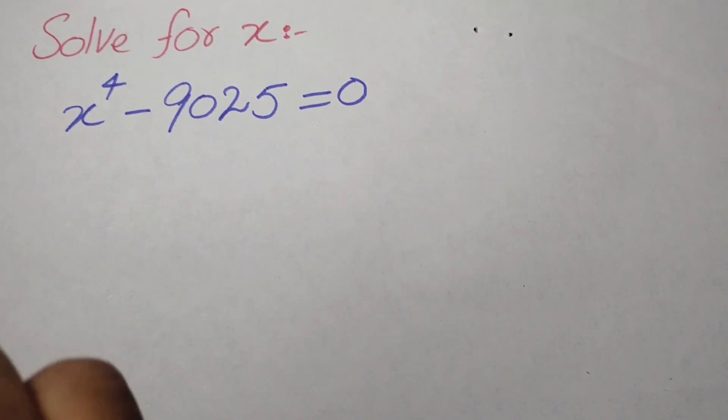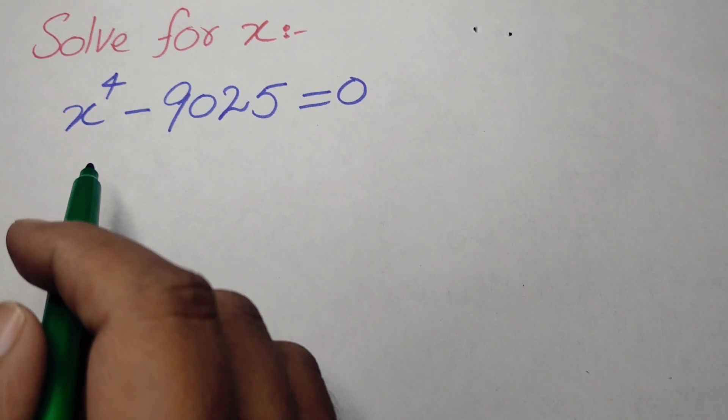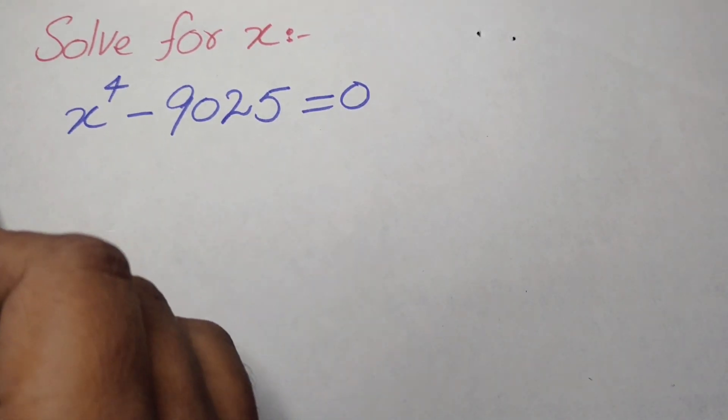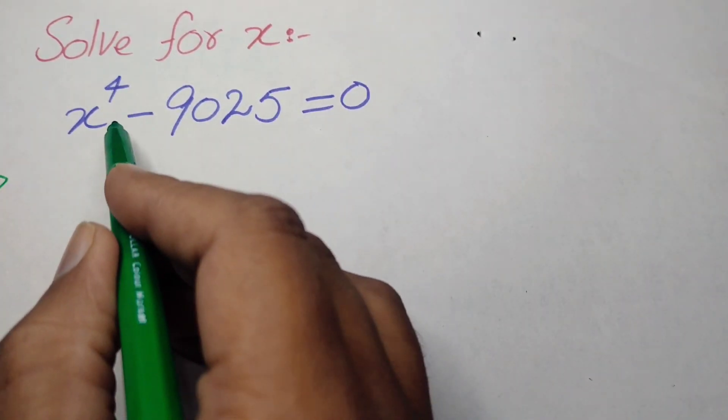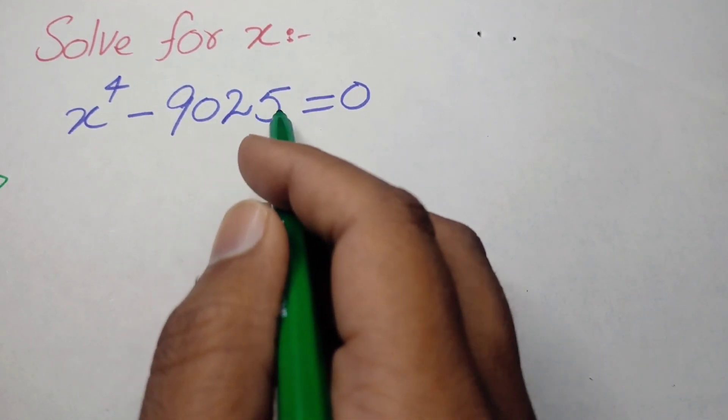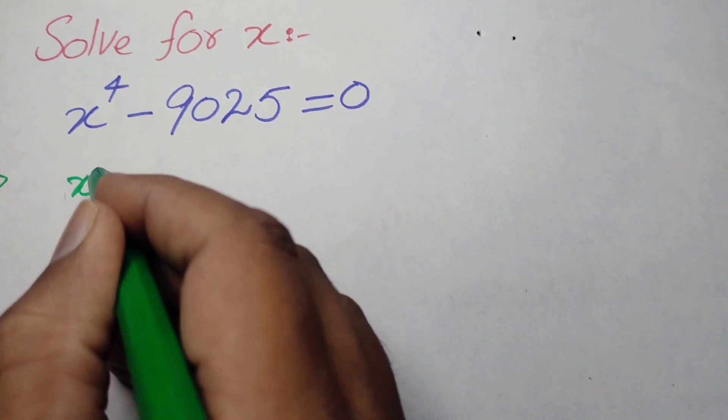Hello everyone, welcome back to the Map of Mathematics. In this video we are going to solve a nice algebraic mathematics problem. The very first step is we know that x to the power of 4 minus 9025 is equal to 0.